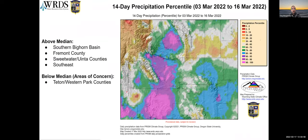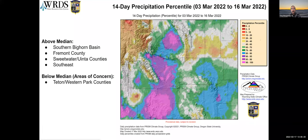This is the 14-day precipitation percentile from March 3rd to yesterday. It shows some areas well above the mean in terms of precipitation, and still in nice blue colors down in the southeast. But areas of concern are Western Park County, Teton County, this northwest area, and parts of the northeast, which are below the median.